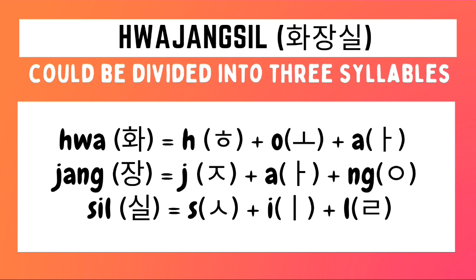Hwa Jang Shil is composed of three syllables. Let's go through each one. First, to write Hwa in Hangul, we need to draw a Hiyot character, followed by the O character, followed by the A character. The Hwa sound is formed by the combination of the O and A characters. So that's Hwa.